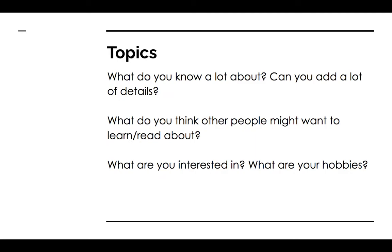So when you're thinking about what topic to choose and write about, it is important to consider things we already know a lot about. I want you to think: what do I know that other people might want to learn? This could include your hobbies or interests. It is also important to choose something you know a lot about, so you can provide your reader with a lot of great details.